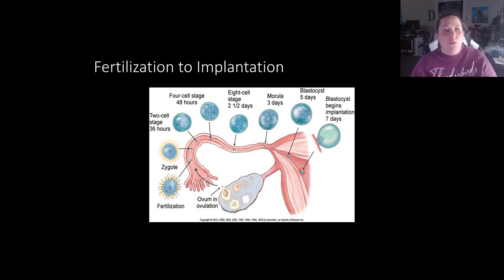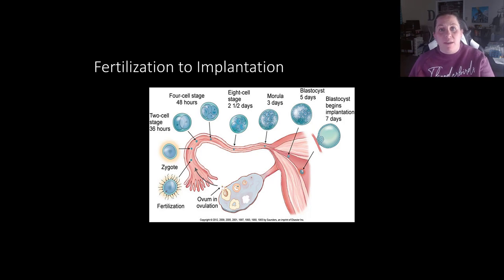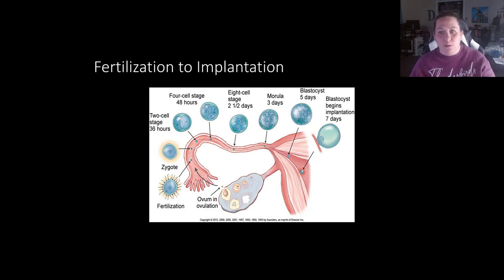The zygote then goes through the process of starting to divide. It goes into its two-cell stage within 36 hours of fertilization. Within 48 hours there are four cells, in two and a half days there are eight. We see the morula stage after three days, the blastocyst stage after five. By this time the blastocyst should be close to the uterus, ready to implant into the endometrium — about seven days after fertilization.